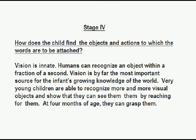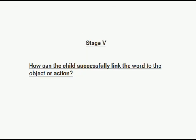So, how does the child find the objects and actions to which the words are to be attached? Well, it's a matter of vision, first of all. Vision is innate. Humans can recognise an object within a fraction of a second. Vision is by far the most important source for the infant's growing knowledge of the world. Very young children are able to recognise more and more visual objects and show that they can see them — they show this by reaching for them, and at four months of age they can actually grasp them.